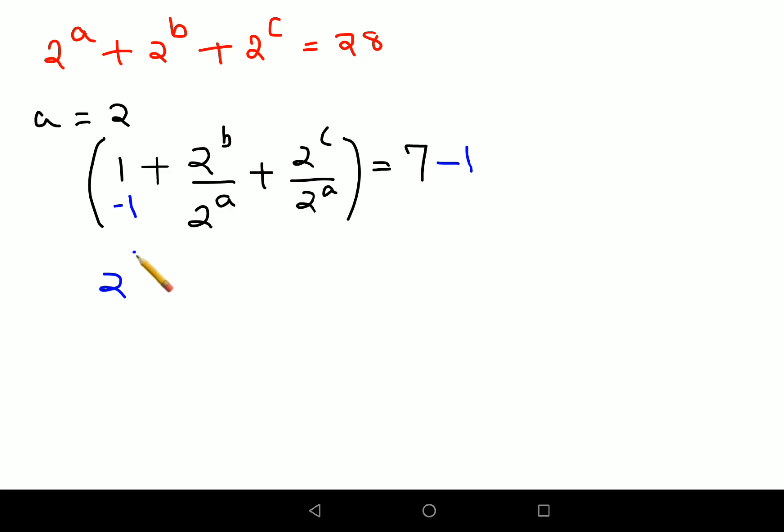So we're left with 2 raised to b upon 2 raised to 2 which is 4, plus 2 raised to c upon 2 raised to 2 which is again 4, equals to 6. Now since the bases are same, since the denominator is same, I can directly write this as 2 raised to b plus 2 raised to c, and this 4 when shifted on this side becomes 24.